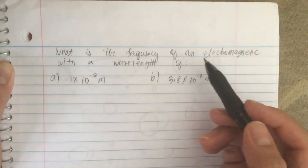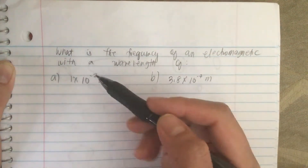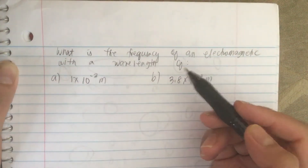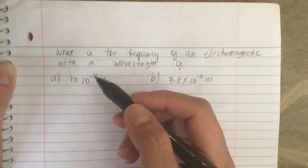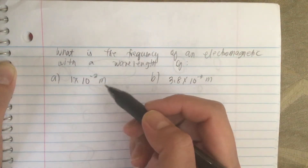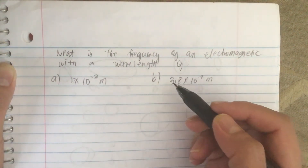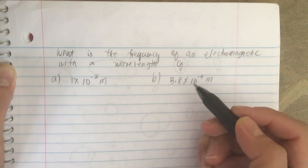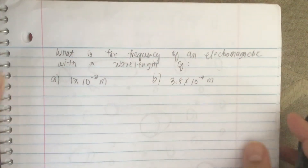What is the frequency of an electromagnetic wave with a wavelength of (a) 1 times 10 to the minus 3 meters, and (b) 3.8 times 10 to the minus 7 meters?